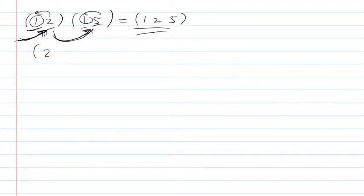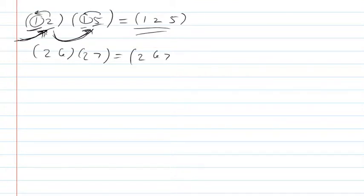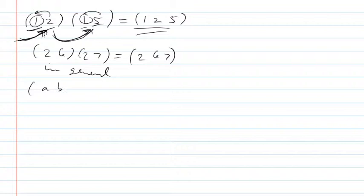If I took another pair of two-cycles with the first number in common and did the composition, it would be (2, 6, 7). In general, if I have (A, B) and (A, C), the composition would be (A, B, C).